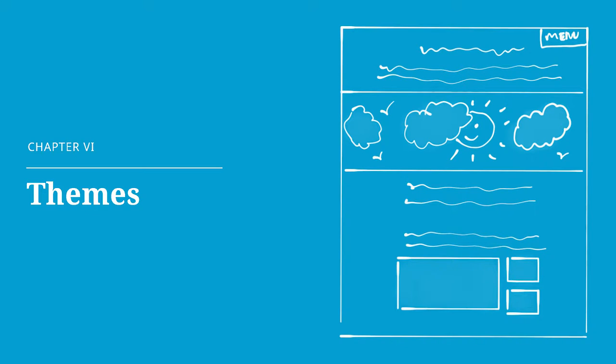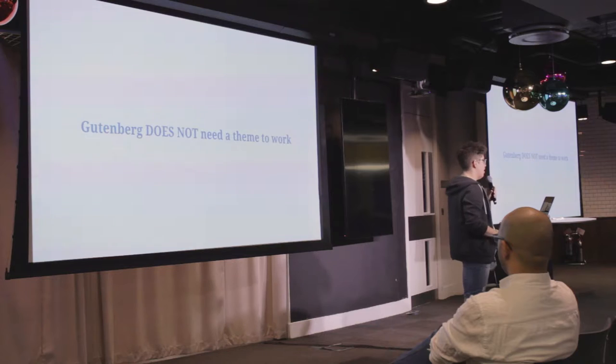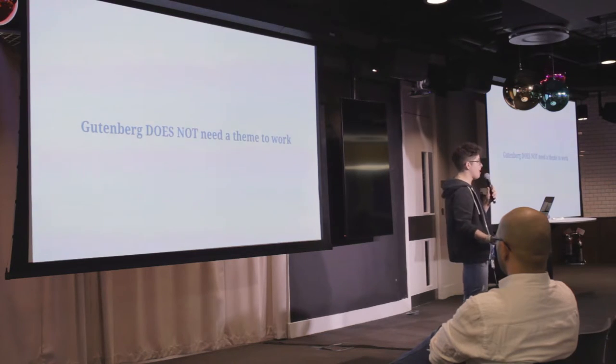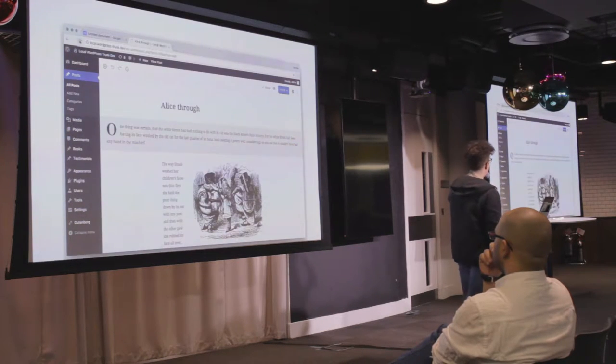One of the things that comes up a lot when talking about Gutenberg is themes. Gutenberg does not require a theme to work, but themes are an important part of WordPress. Themes are going back to being a lot more about CSS and won't have so much weight compensating for the way WordPress works. In Gutenberg, you can actually bring a stylesheet into the actual editor. When you reload, it looks like the front page — it's a way to bring the front-end experience back.